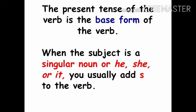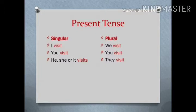The present tense of the verb is the base form of the verb. When the subject is a singular noun — he, she, or it — you usually add 's' to the verb. For example, we put 's' with the verb for he, she, it. But for singular 'I', 'you', and plural 'we', 'you', 'they', we do not add any 's' or 'es'. So if we write or talk about he, she, it, or any singular person or thing, we use verb plus 's'.